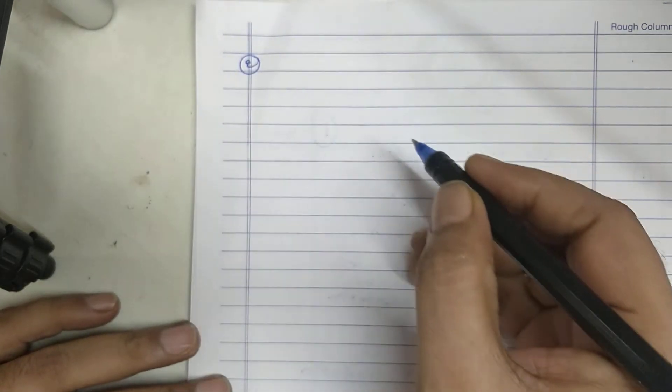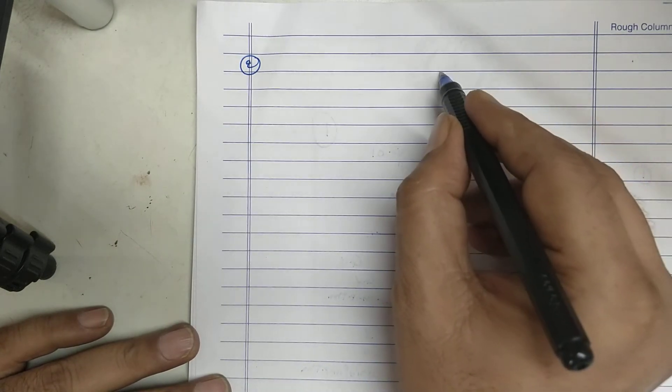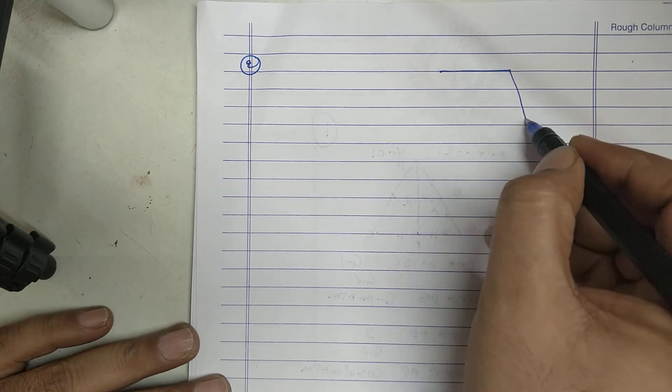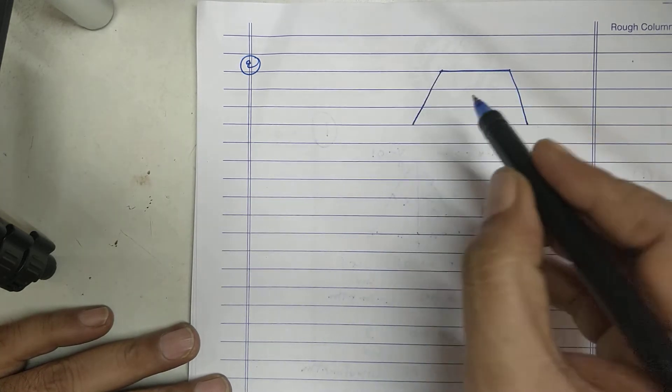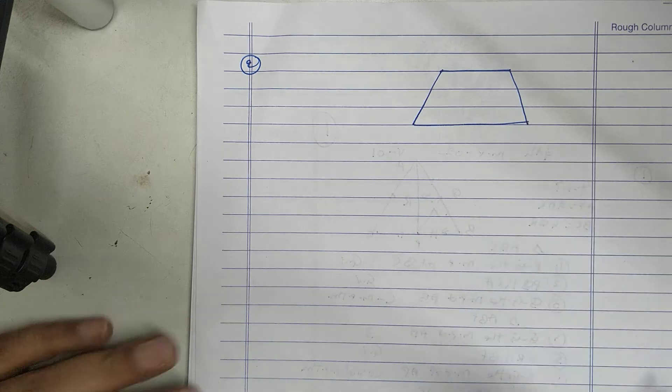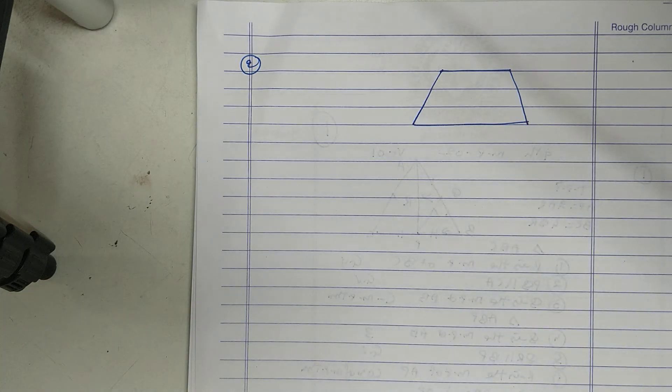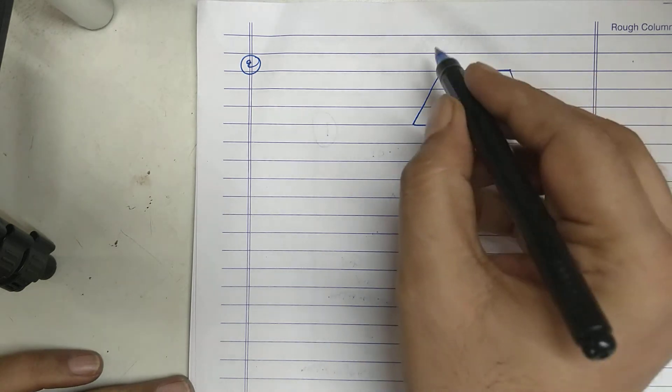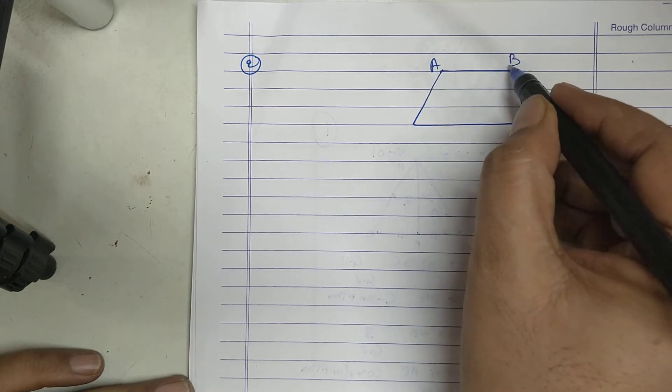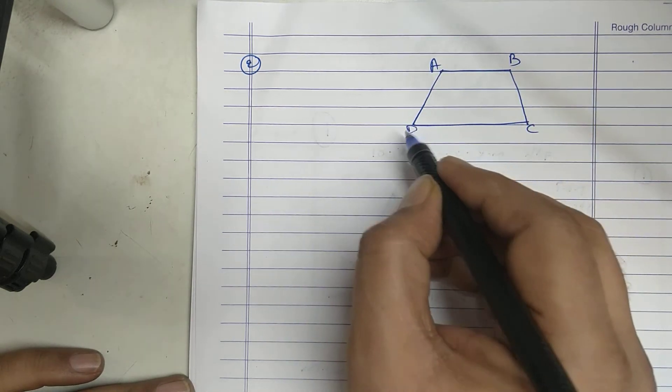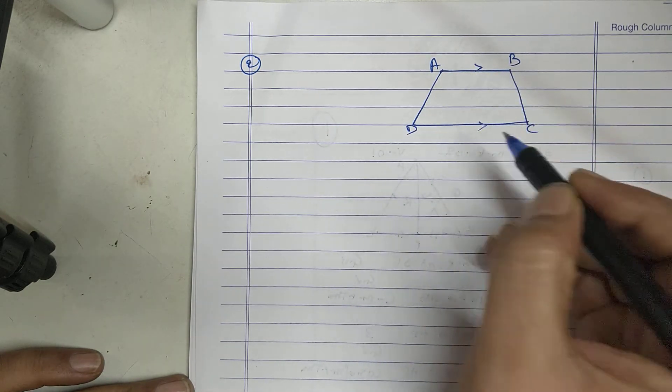Sum number 2. In trapezium ABCD, AB parallel to CD.